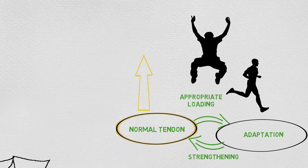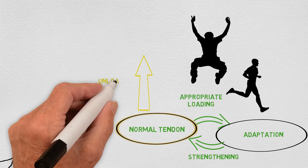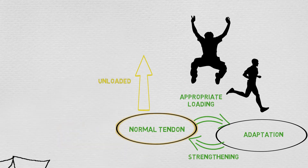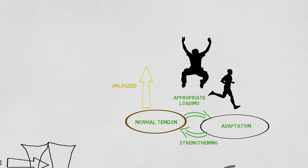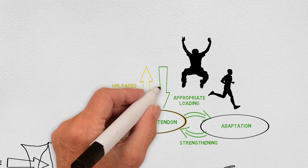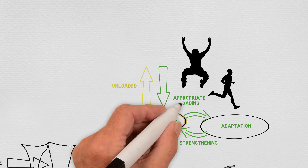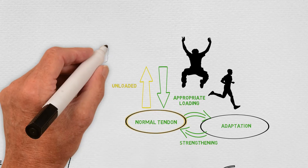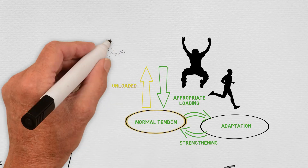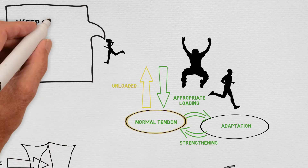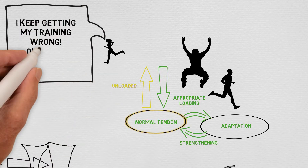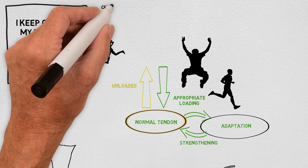It is also possible to relatively underload a tendon when returning from injury, or with athletes' acute training loads reducing too much relative to their chronic loads. Cross-reference this with the work of Tim Gabbett.